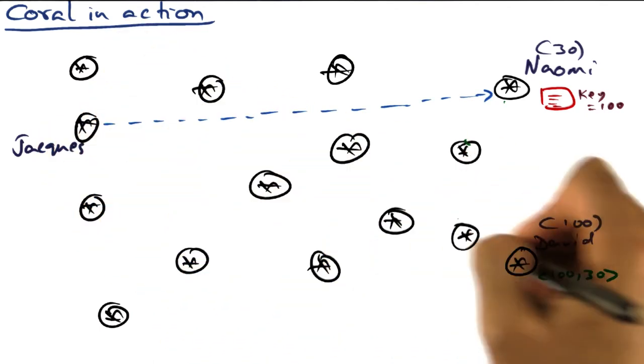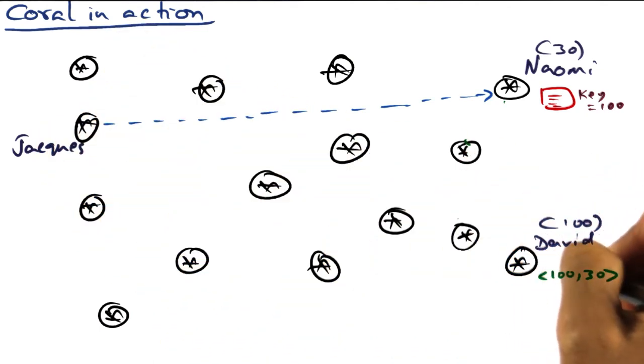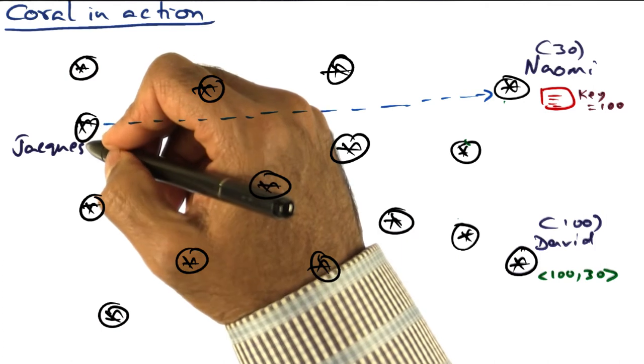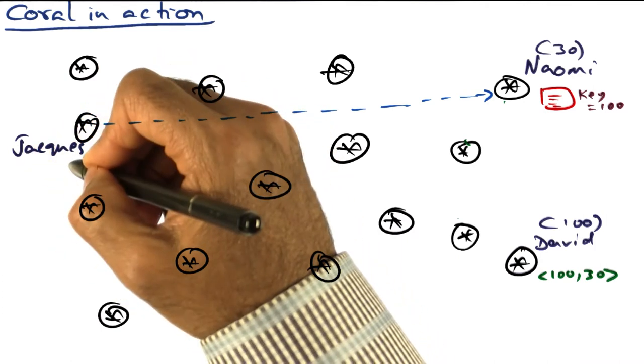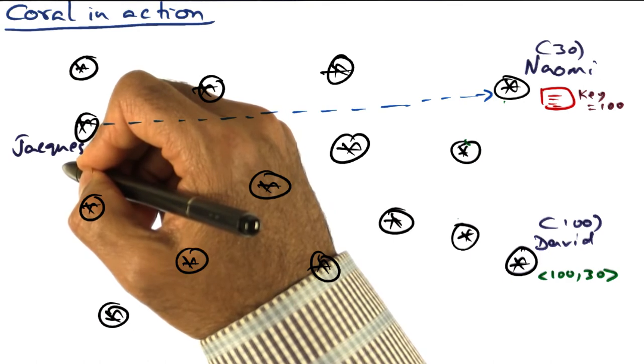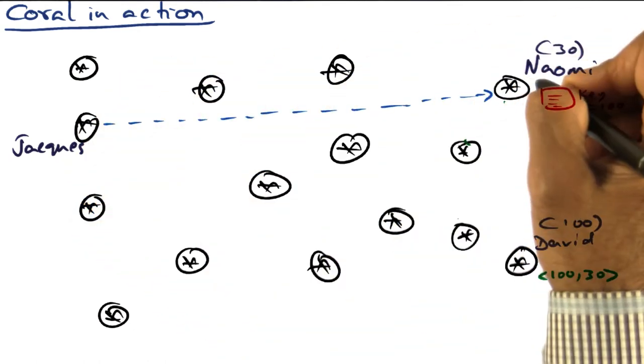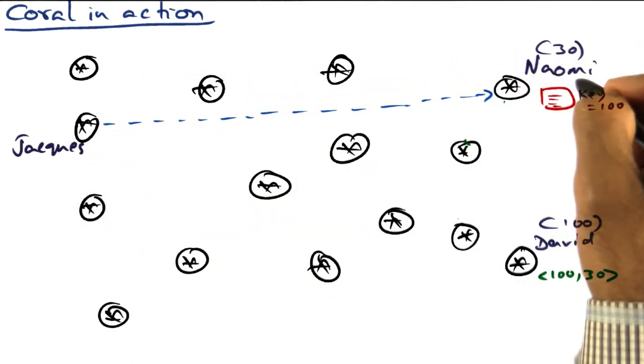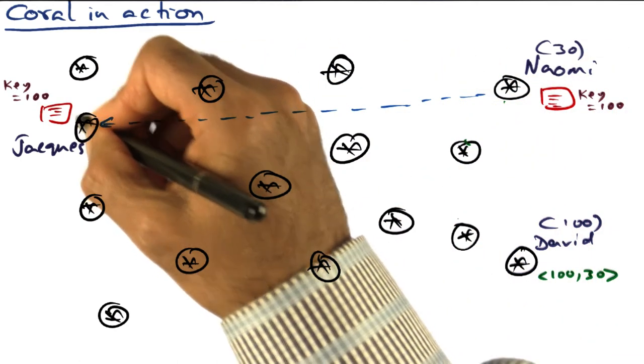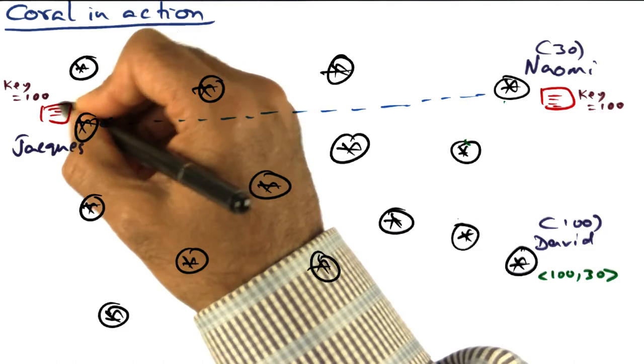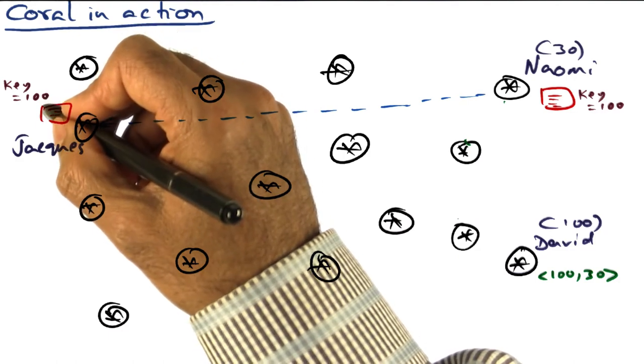So when Jacques gets his response from David that the value is 30, that value indicates the node ID from which Jacques can download the content corresponding to the key 100. And so that's Nomi's computer. So Jacques goes to Nomi's computer and gets the content corresponding to key 100. Nomi sends the content. So Jacques is now happy. He's got the content that corresponds to 100.